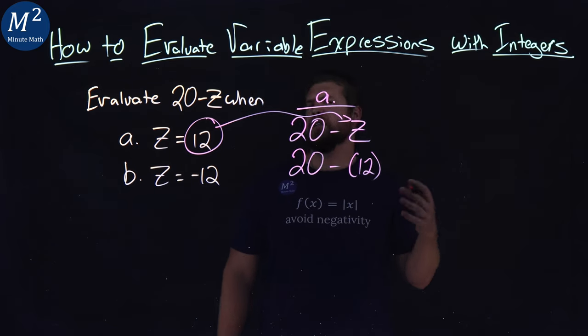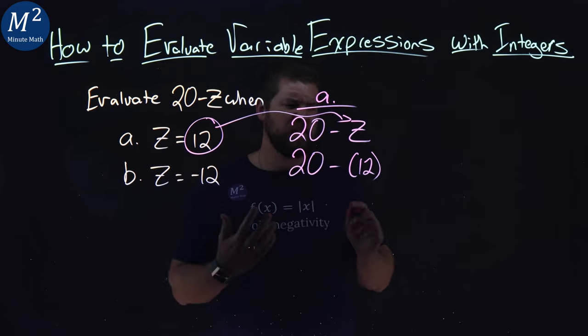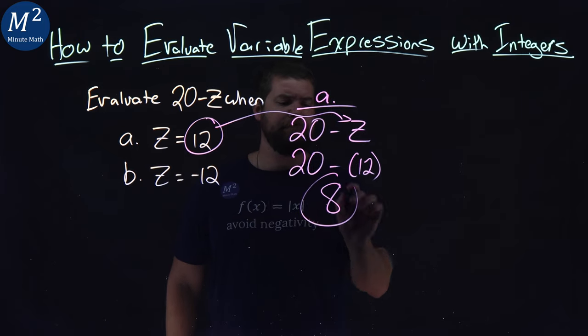Well, 20 minus 12 is pretty easy because 20 is larger than 12, so it's just going to be 8. Not too bad.